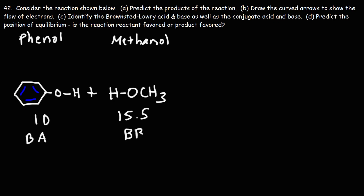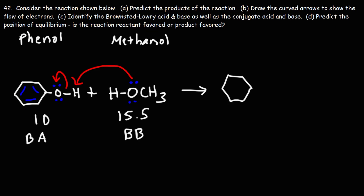Phenol is going to be the proton donor; methanol is going to behave as the Brønsted-Lowry base — the proton acceptor. Now we need to draw the curved arrows to show the flow of electrons to predict the products. The base acts like the nucleophile; arrows point from the lone pair to the hydrogen. When this bond breaks, electrons go toward oxygen, which is more electronegative than hydrogen, giving us the conjugate base of phenol — phenoxide.